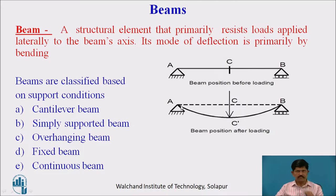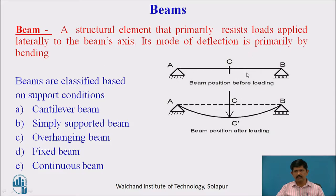Before that we will see what is a beam. A beam is a structural element that primarily resists loads applied lateral to the beam axis, and the mode of deflection is by bending. The beam resists loads perpendicular or lateral to it, and there is deflection or bending of the beam.